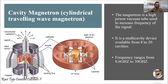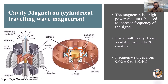Hello everyone, welcome to the course of microwave engineering. In today's session we are going to learn about the cavity magnetron. This cavity magnetron is also called a cylindrical traveling wave magnetron. Similar to previous tubes used for amplification and oscillation of signals, this cavity magnetron is also a high power vacuum tube used to increase the frequency of the signal.